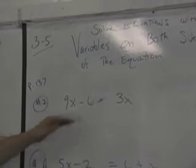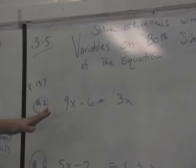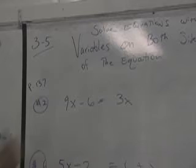So we're on section 3-5, solving equations with variables on both sides. Anybody know how to do that? Shannon, you know how to do this? What are we looking for? What are we trying to solve? Shannon, what are we doing here?